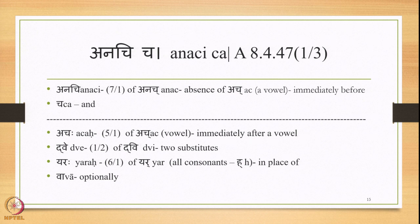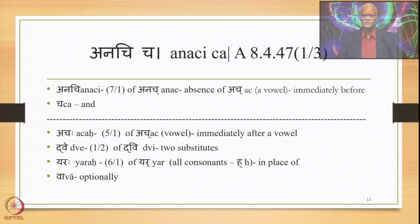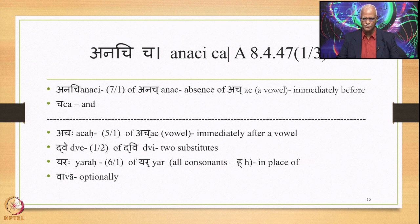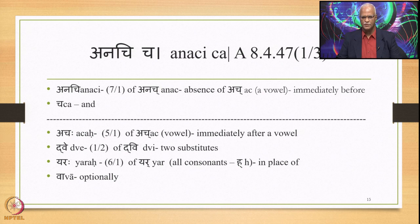Anachicha consists of two words: Anachi and Cha. Anachi is 7th/1st of Anach. Anach means absence of Ach — absence of a vowel. Anachi means immediately before the absence of a vowel. Cha means end. Words continued from the previous sutra are Achaha (5th/1st of Ach — immediately after a vowel), Dve (1st/2nd of Dvi — two substitutes).